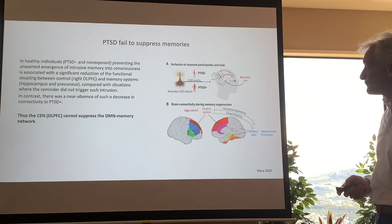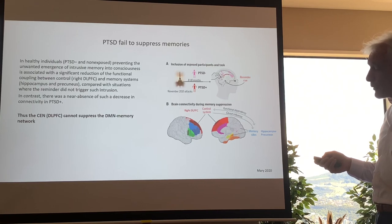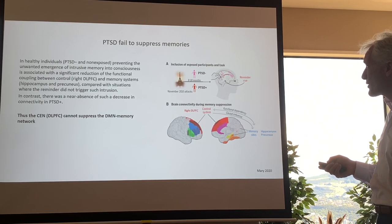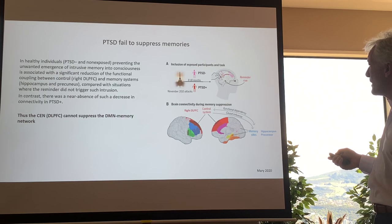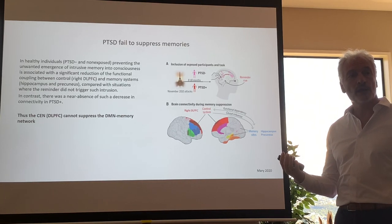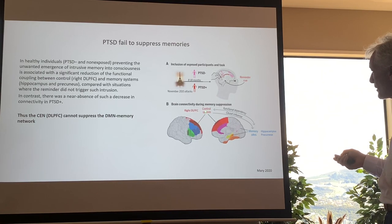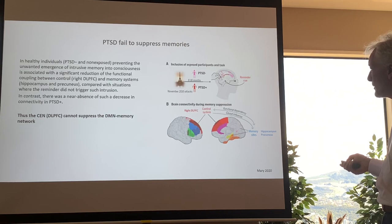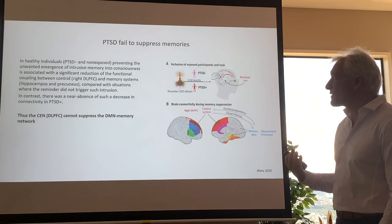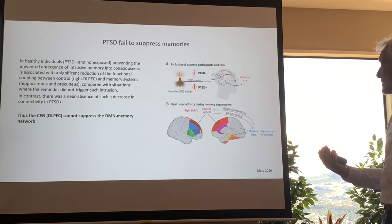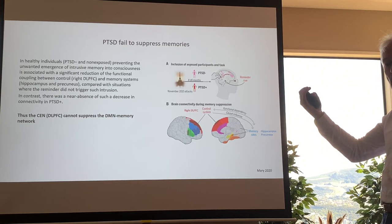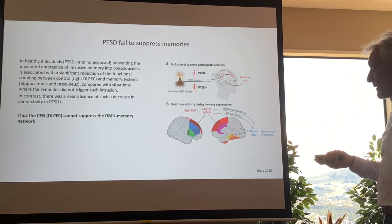If you fail to suppress specific memories, that is when you develop post-traumatic stress. A study published in Science showed that when connectivity between the dorsolateral prefrontal cortex — part of your central executive or frontal parietal control network — loses its link to the parahippocampal or hippocampal memory area, you basically disconnect the memory from the dorsolateral prefrontal control system. The memories are not being pushed into working memory mode, and therefore you're not consciously engaging with those memories.